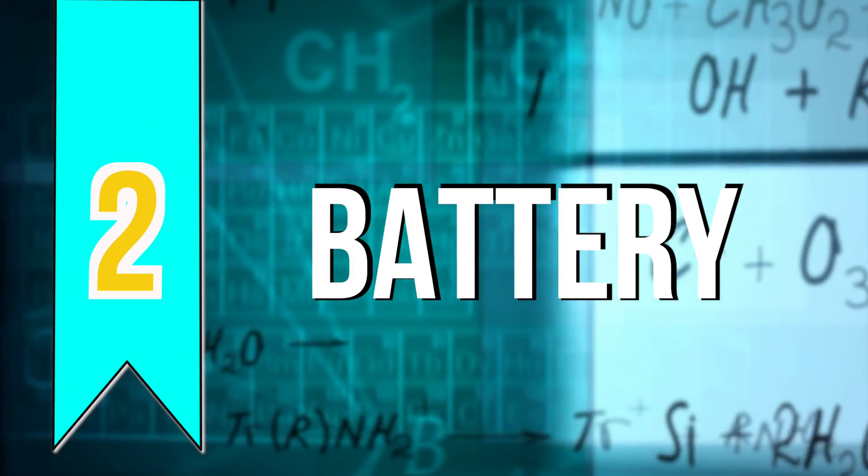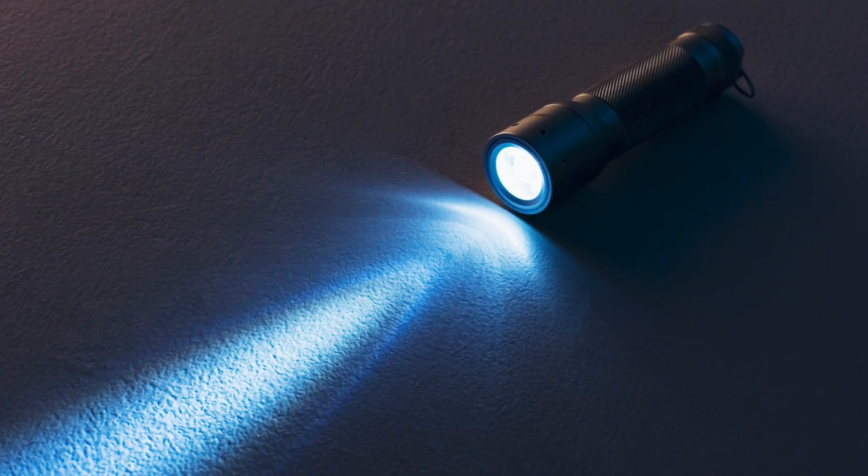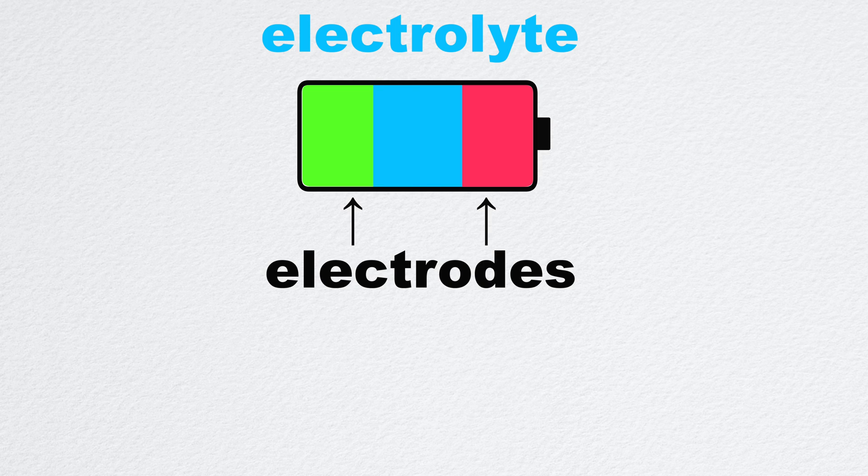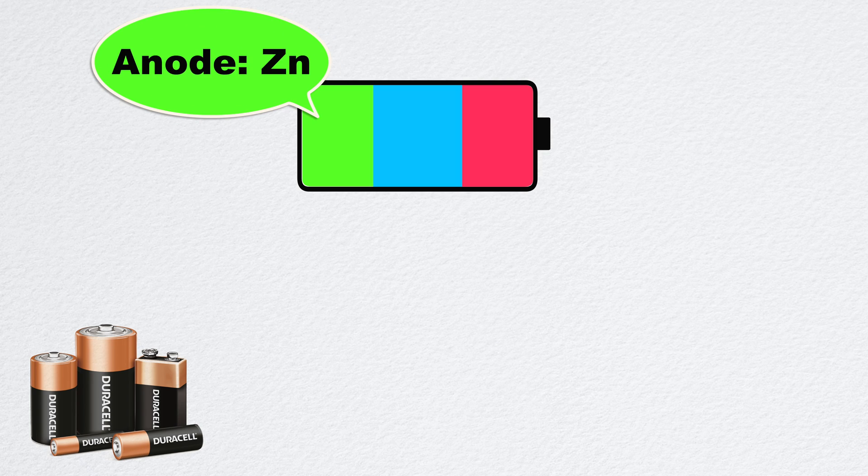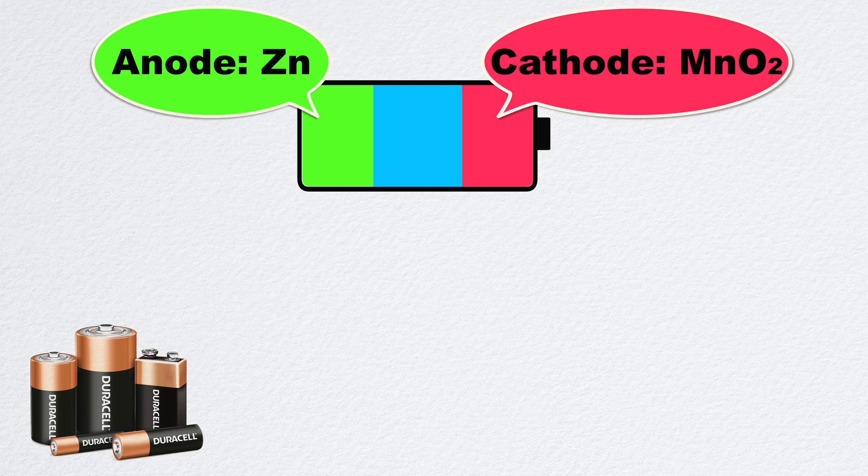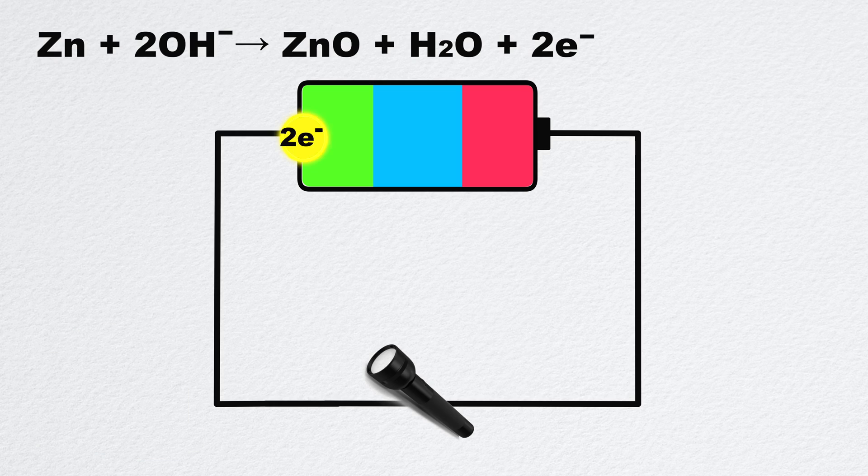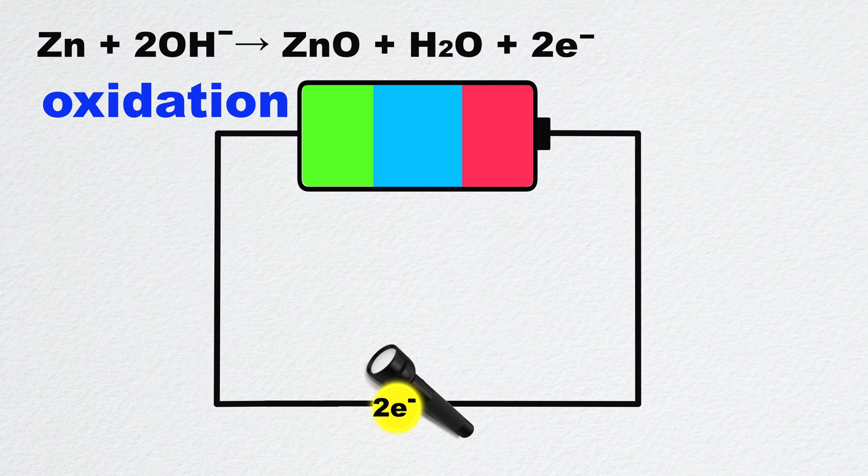Number two, battery. From flashlights to mobile phones, batteries are indispensable in everyday life. Batteries have two electrodes and an electrolyte in between them. Alkaline batteries such as Duracell uses zinc as the anode and manganese dioxide as the cathode. When you switch your flashlight on, zinc gives up two of its electrons leaving zinc ions behind at the anode. It is an oxidation reaction.